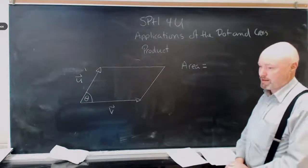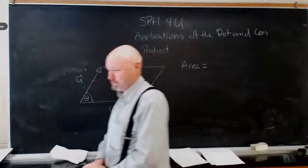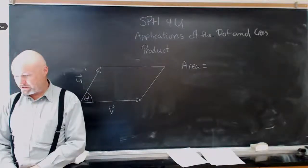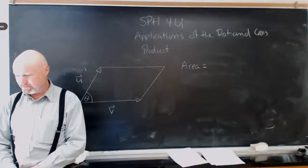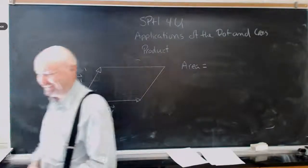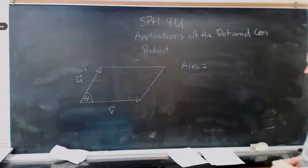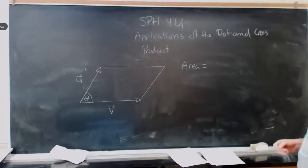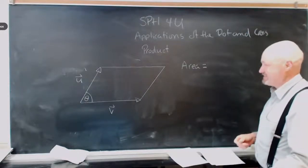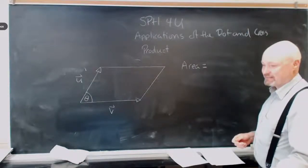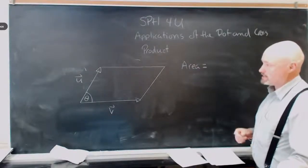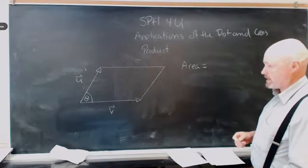First application is actually the area of the parallelogram. And this doesn't actually involve a projection per se, but it winds up using the cross product. So it's sort of a nice easy first application. So there's my parallelogram. The two sides are defined by two vectors U and V. And we've got an angle in here that is theta. Who remembers the formula for the area of the parallelogram? Length times width? Well, that's a special kind of parallelogram.